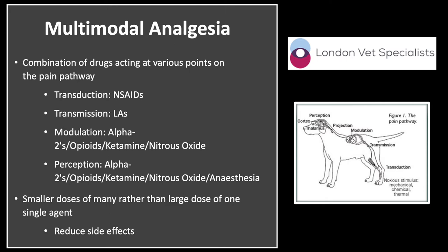Non-steroidal anti-inflammatory drugs act at the periphery where transduction of a noxious stimulus occurs, such as mechanical, chemical, or thermal pain or injury. When the pain signal is sent along the nerve fibres towards the spinal cord — known as transmission — local anaesthesia takes action by blocking those pain signals. Drug classes such as alpha-2s, opioids, ketamine and nitrous oxide all act at the spinal cord level, where pain signals are modulated and either sent to the brain for perception or relayed to the reflex arc. At the brain, perception of pain occurs and is intercepted by the same drugs acting on modulation, as well as anaesthesia itself.